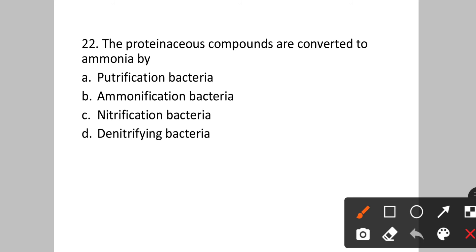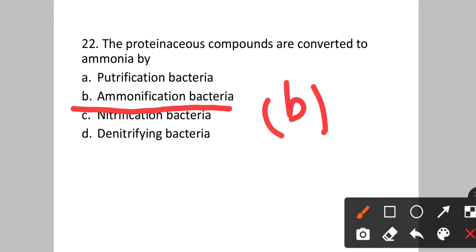Question number twenty-two: The proteinaceous compounds are converted to ammonia by which process? Option A: putrefaction bacteria. B: ammonification bacteria. C: nitrification bacteria. D: denitrifying bacteria. The bacteria responsible for converting proteinaceous compounds into ammonia are ammonification bacteria. Answer will be option B.